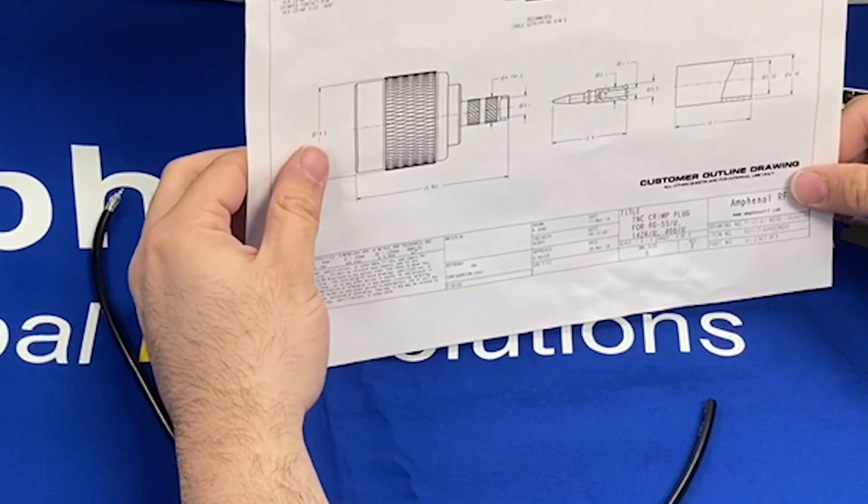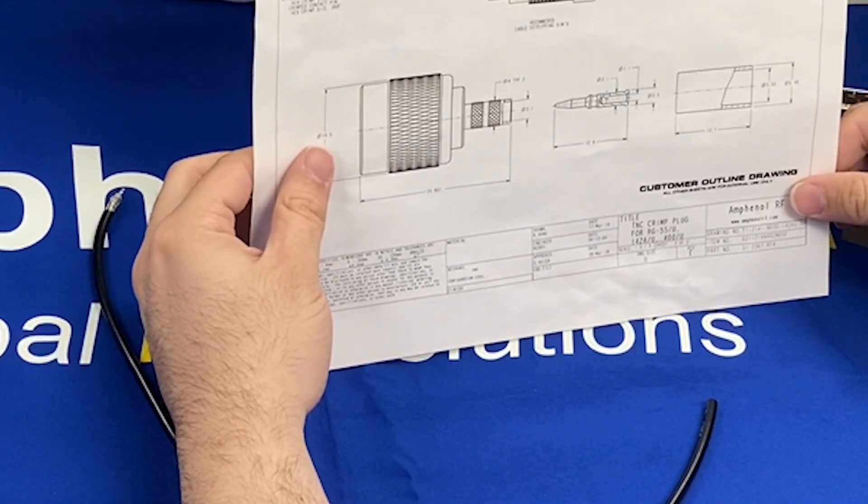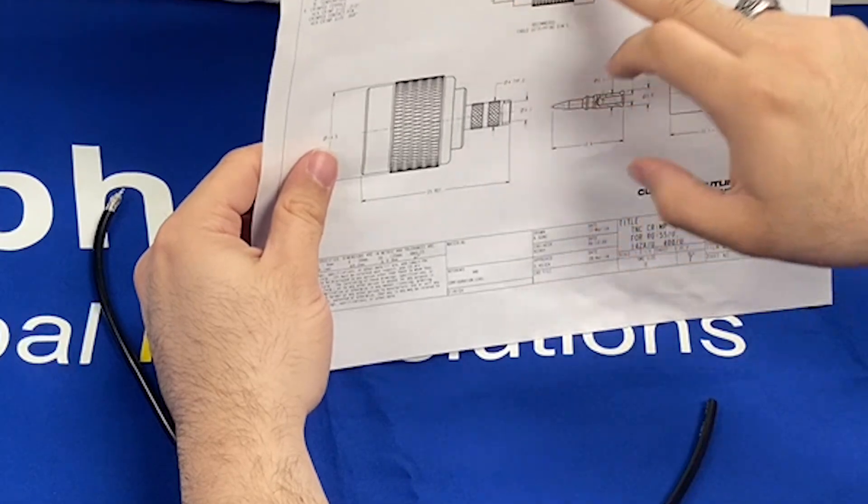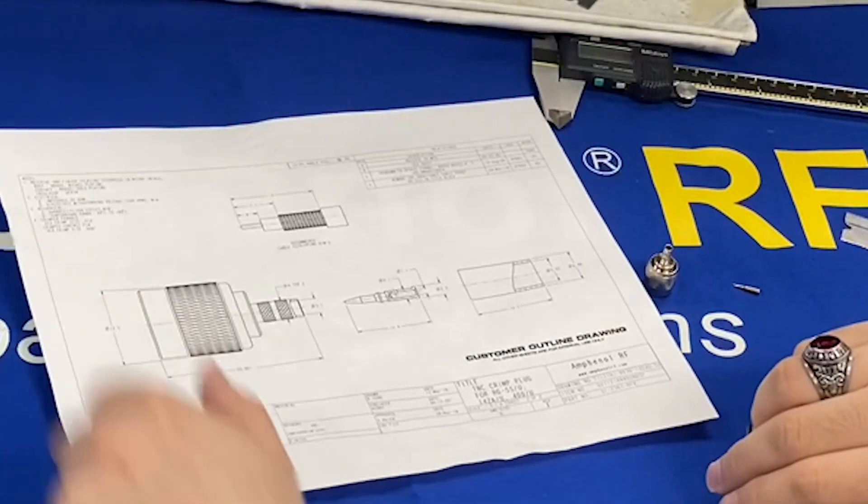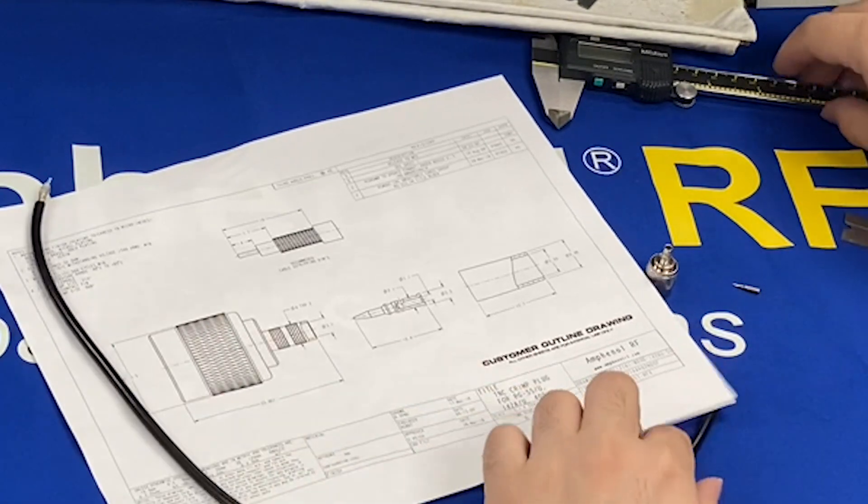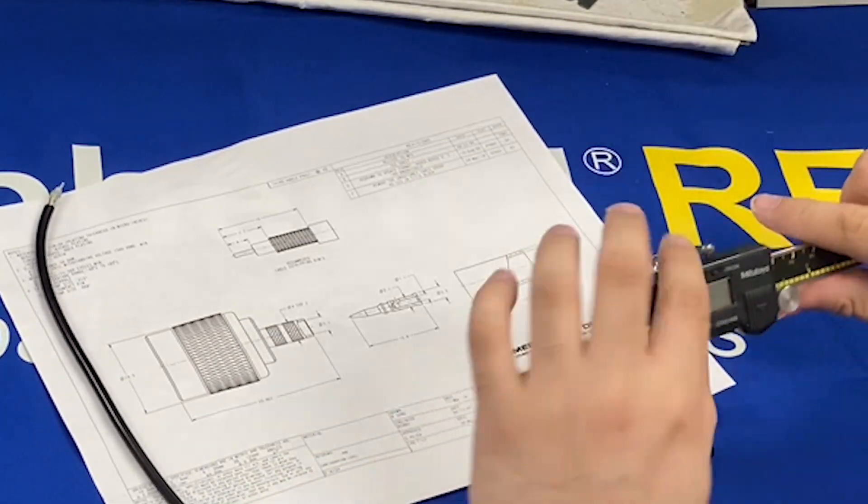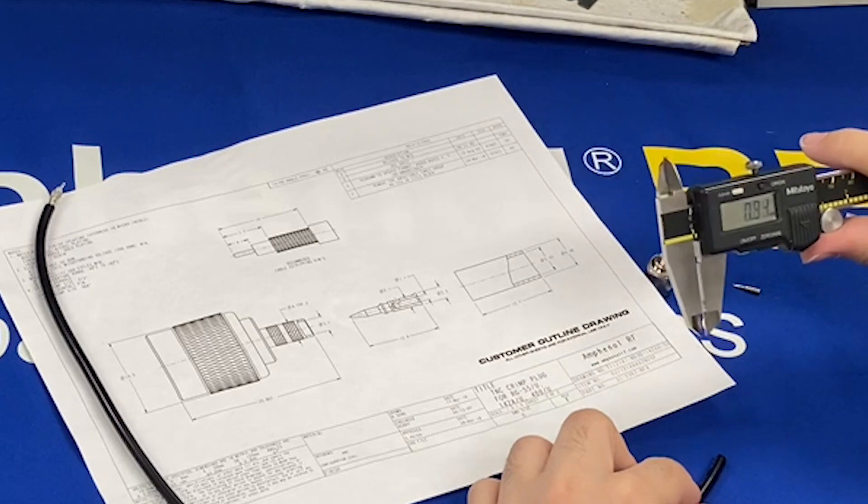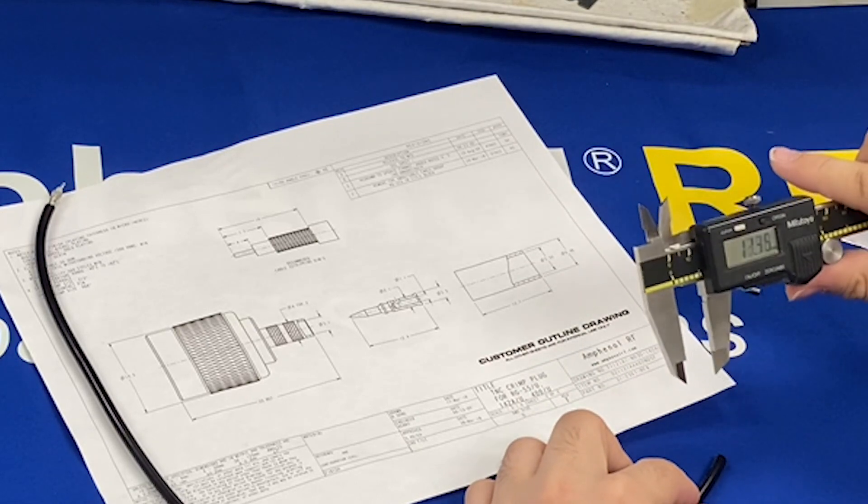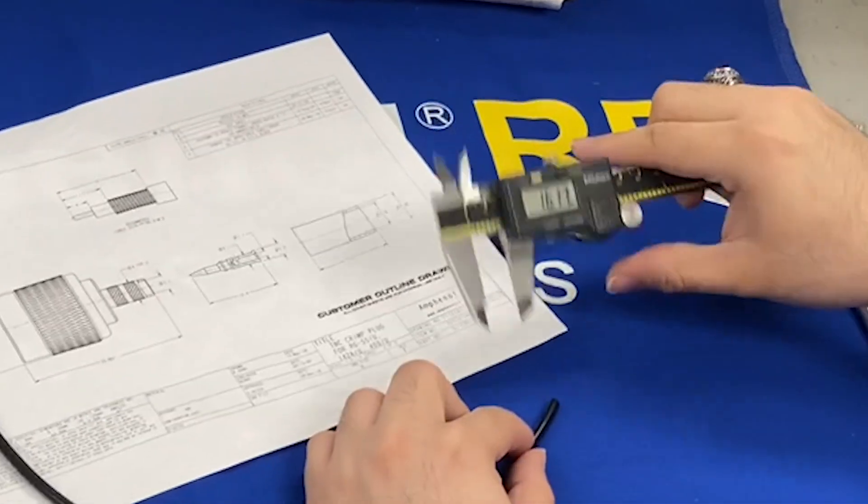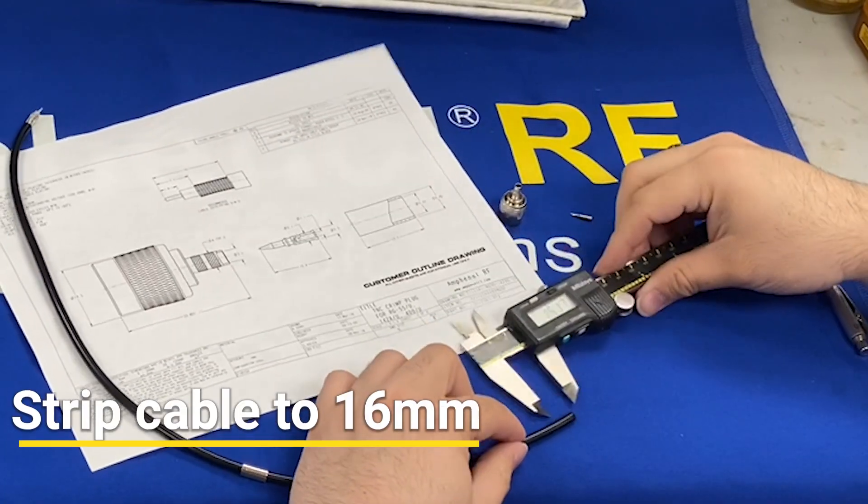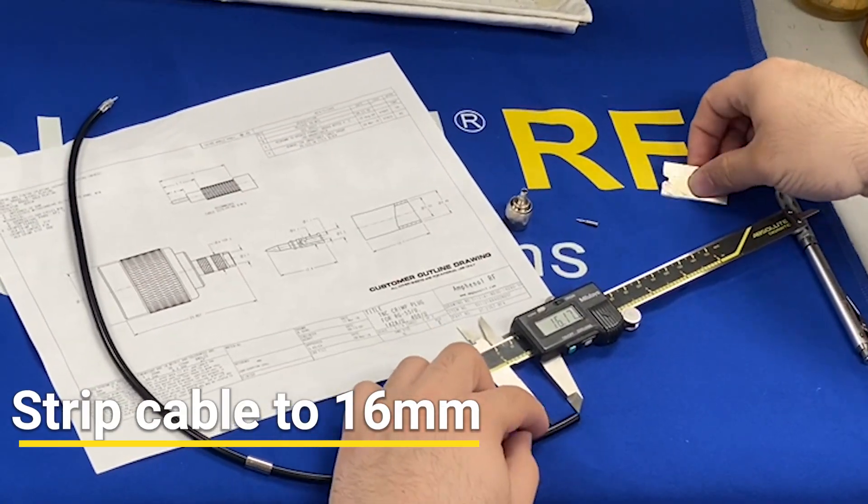Next we are going to consult our customer outline drawing again and pay attention to the recommended cable stripping dimensions. The recommended cable stripping dimensions do not need to be followed exactly. They are general recommendations. So we see our first dimension for the jacket is 16 millimeters. So I'm going to dial in close to 16. We currently have about 16.2 there. That will be good.